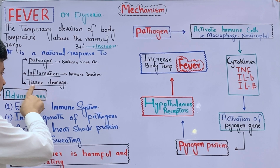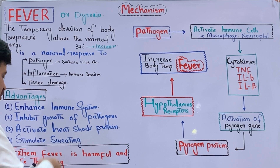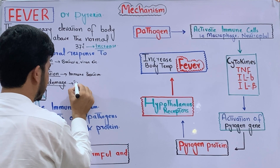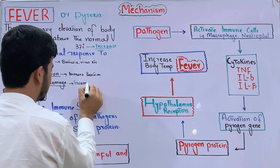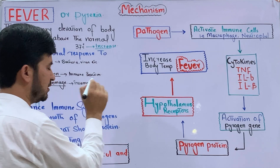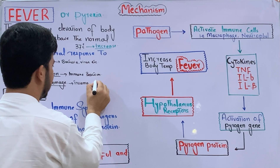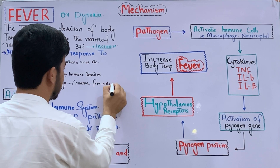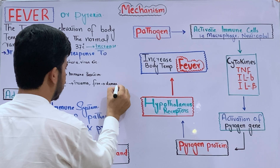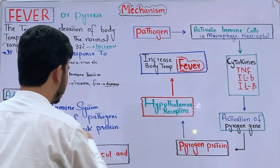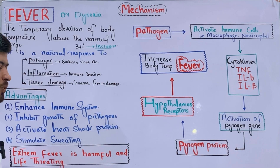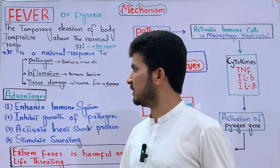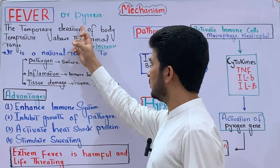Tissue damage in the human body — such as brain tissue trauma, pressure, infection, or physical trauma — can also cause pyrexia. For example, if a person suffers tissue damage from fire or injury, the body's temperature rises above the normal range, and that condition is also Pyrexia.